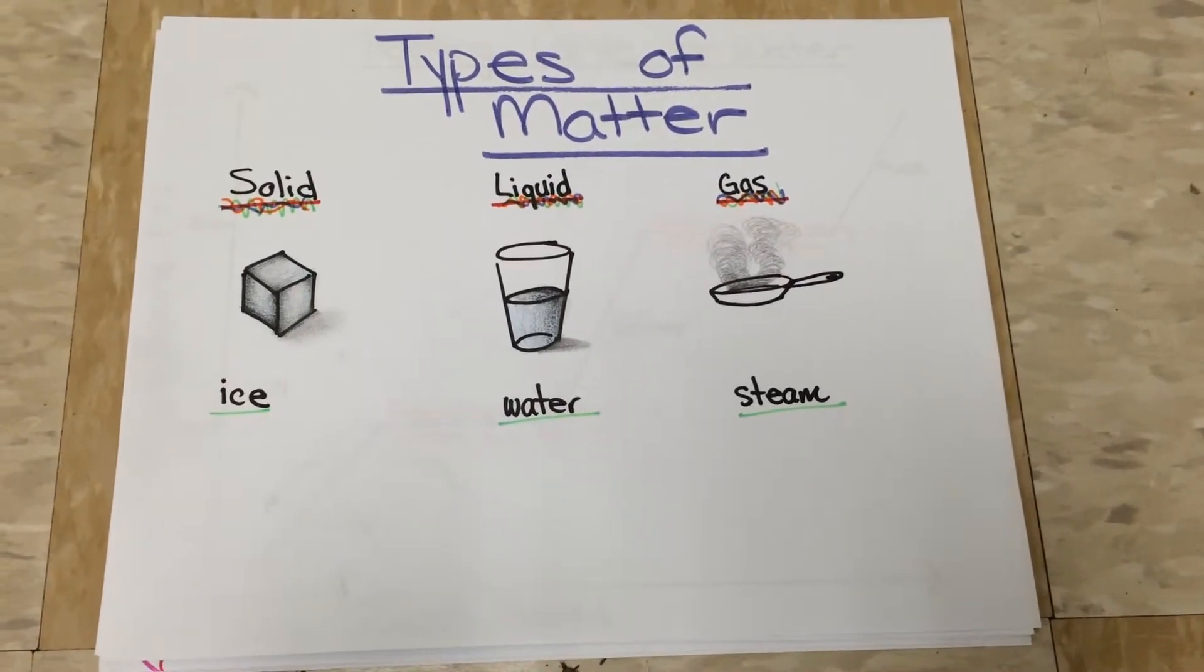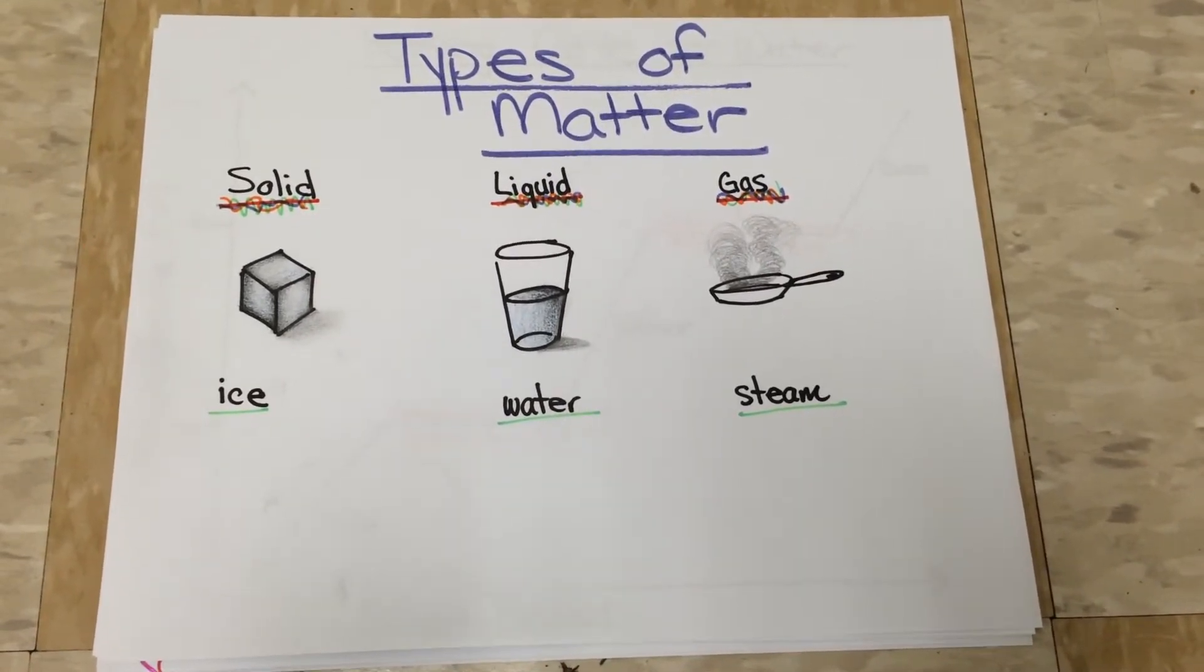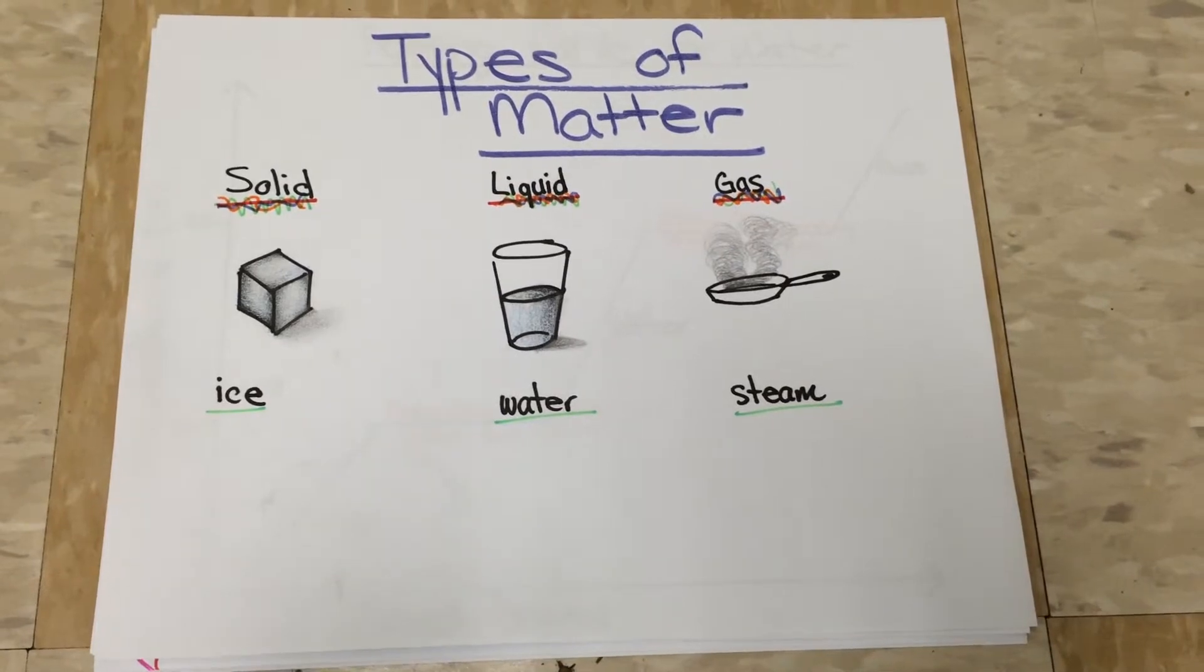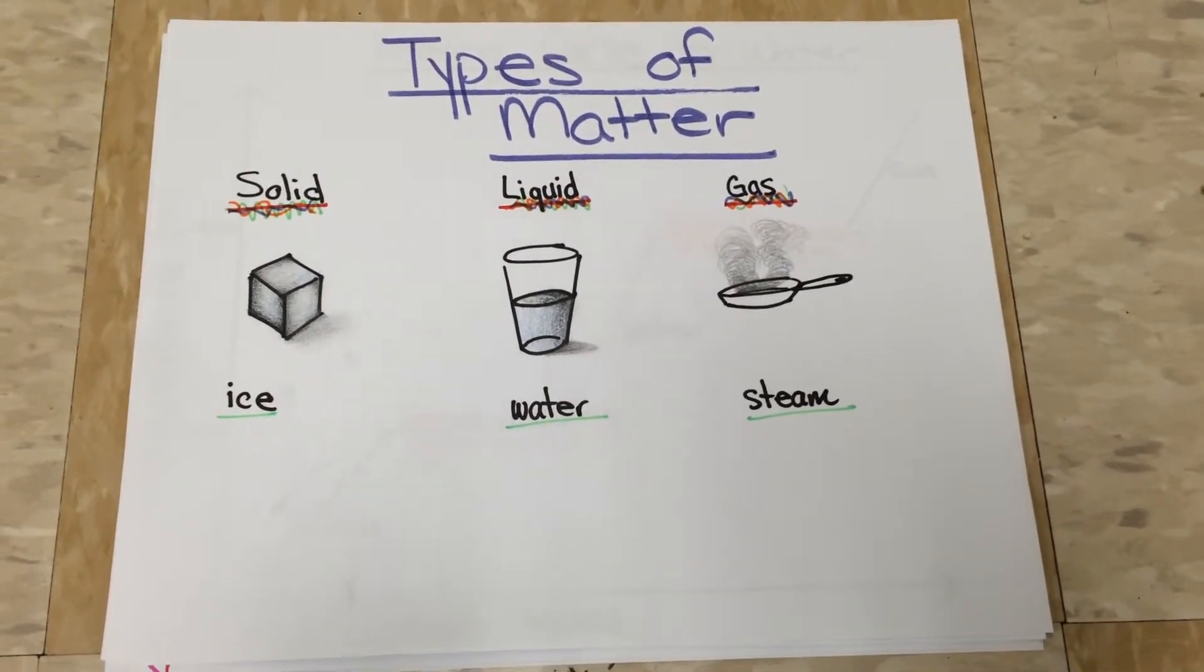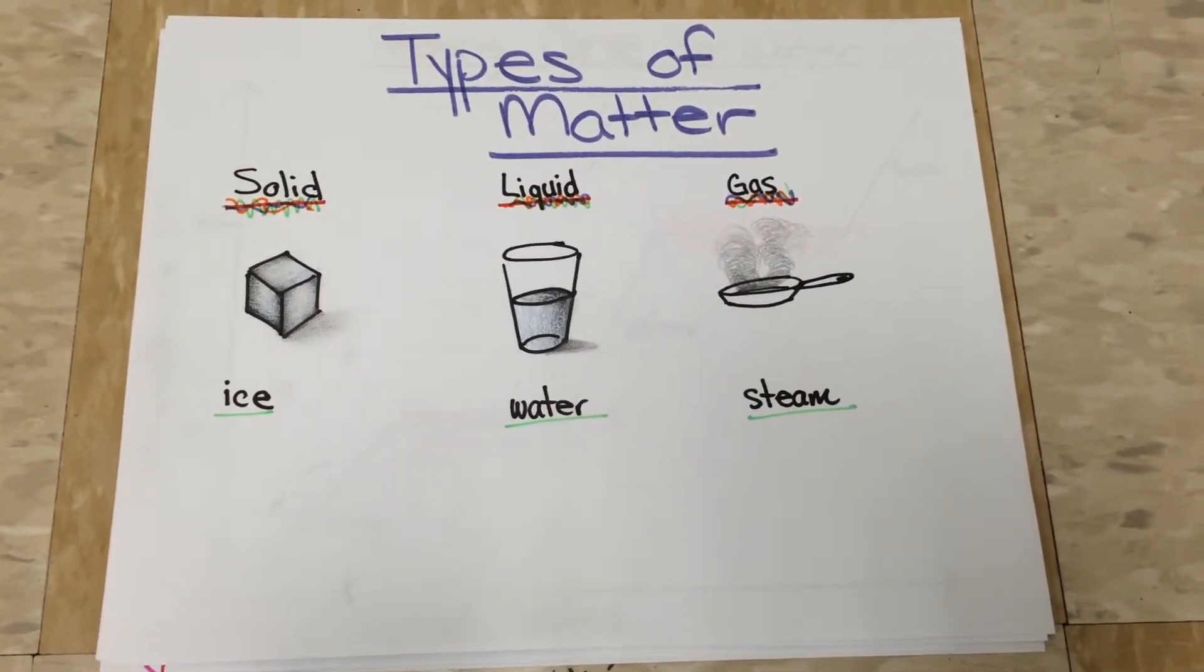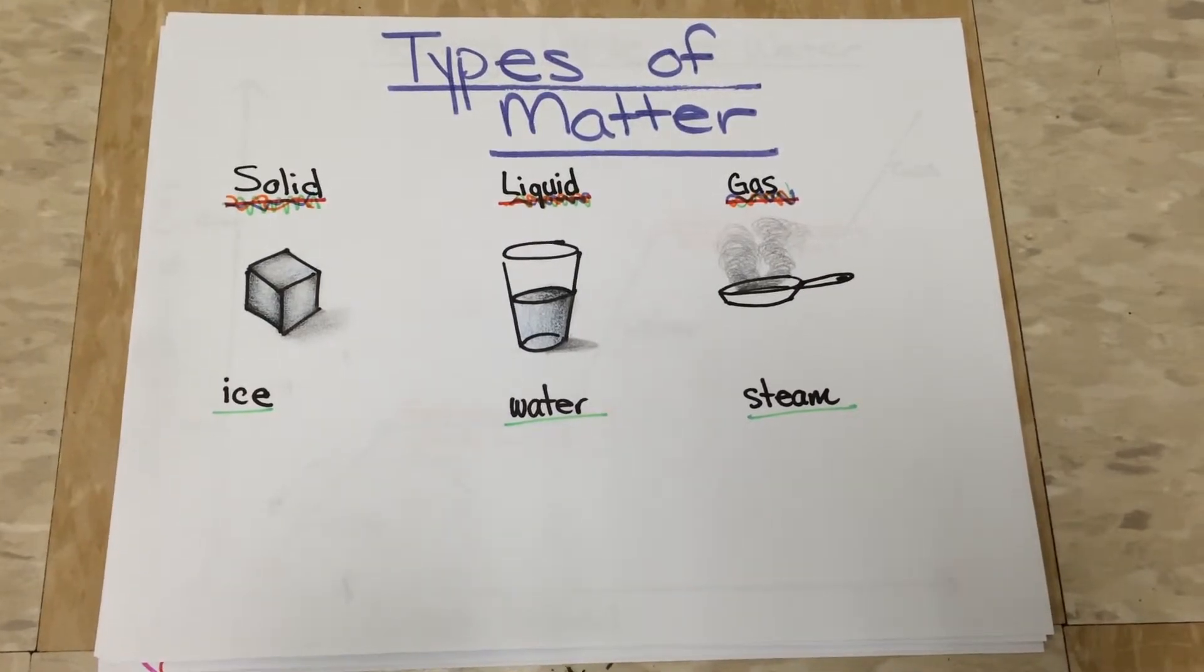There are three different types of matter: solid, liquid, and gas. The state of matter depends on the kinetic energy in the substance. This means the state of matter depends on the amount of motion the particles have.